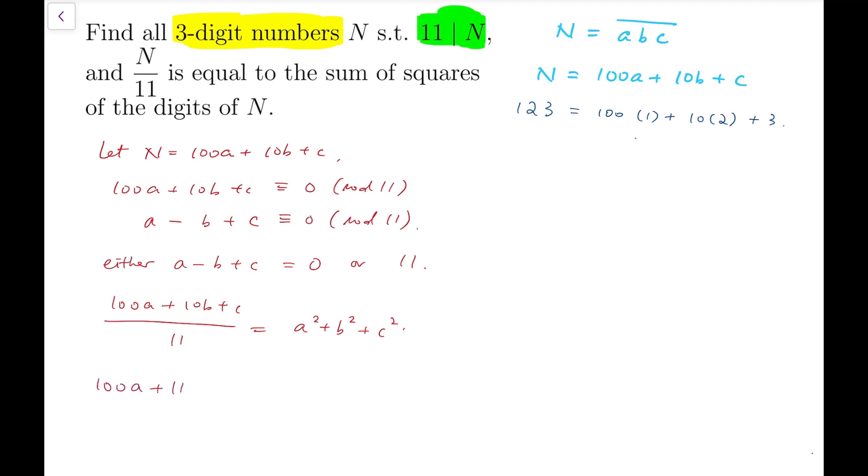So simplifying by moving the 11 to the other side and further splitting the left-hand side into 99a plus a minus b plus c. In fact, this is also the reason why I'm considering a minus b plus c, because this is what we are going to get after removing all the multiples of 11.